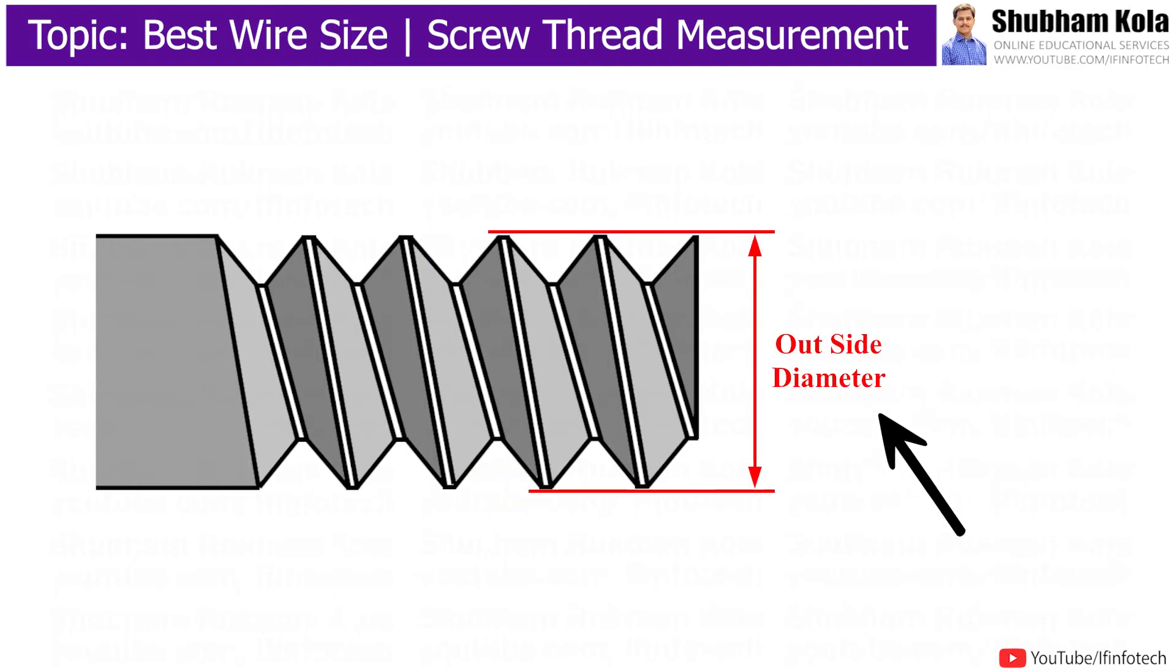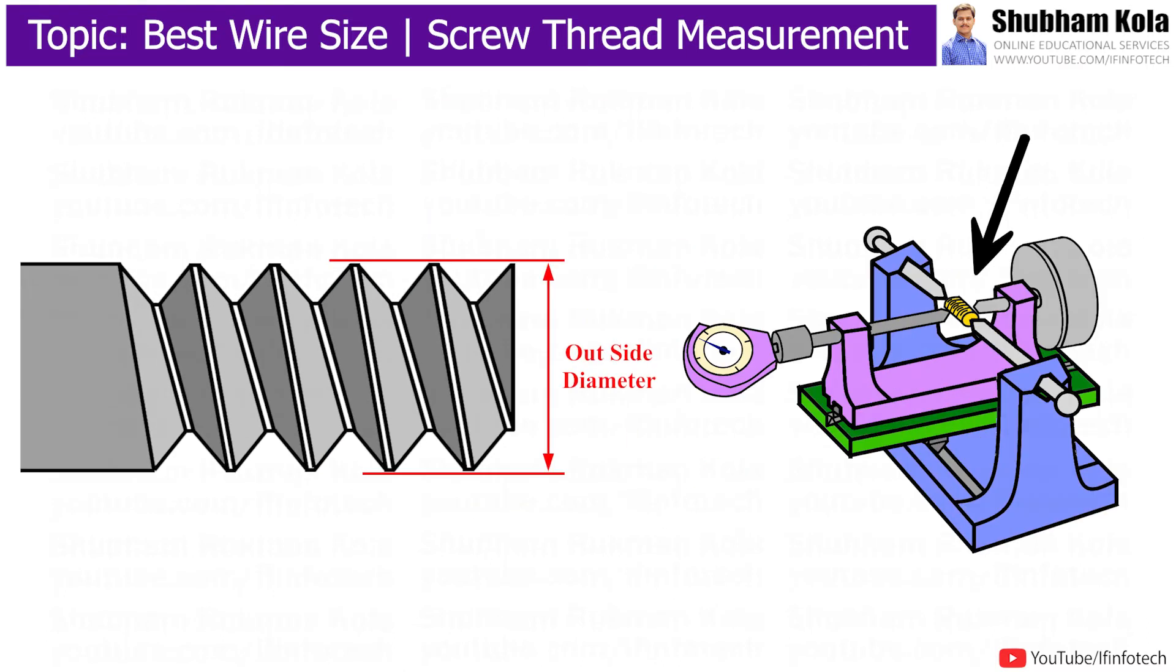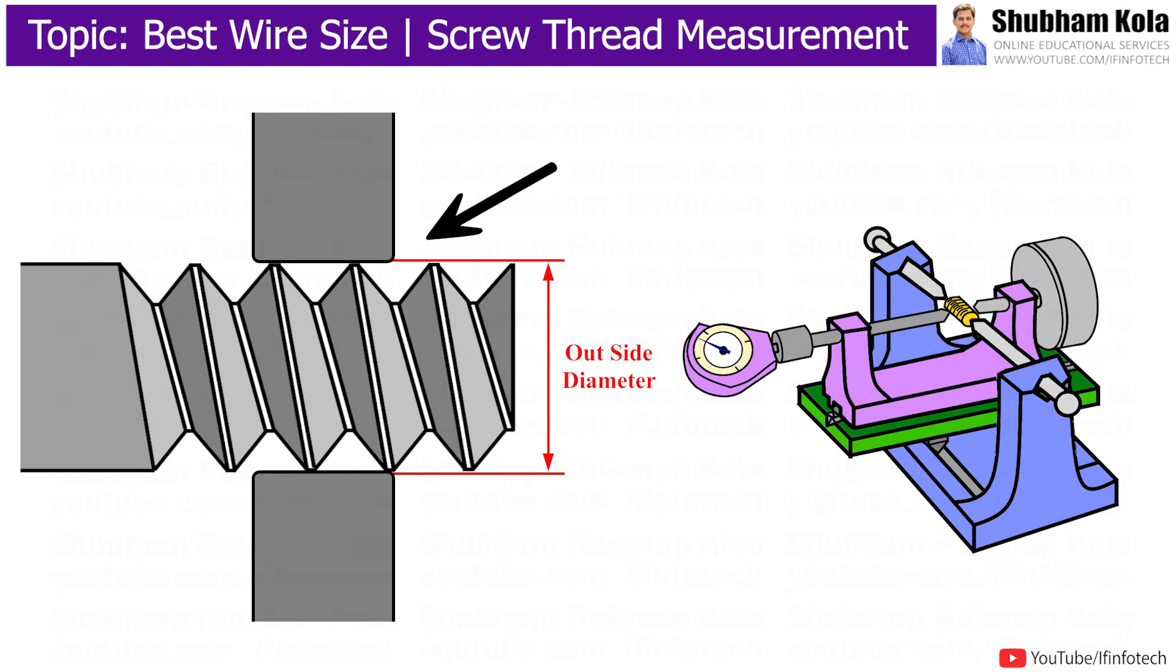To measure outside diameter of threaded workpiece, the workpiece is placed between centers of floating carriage micrometer, and the edges of threads touch the micrometer anvil. Due to point contact between edges and cylindrical anvil, there is possibility of slipping the anvils, meaning contact is not proper and there could be errors in reading.